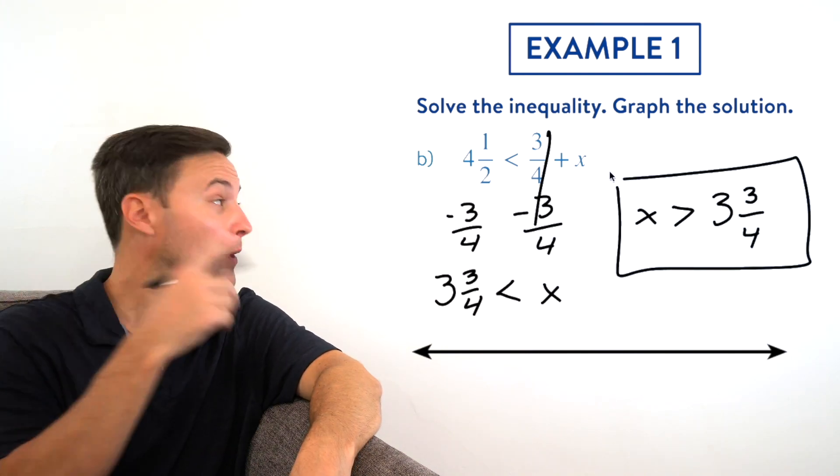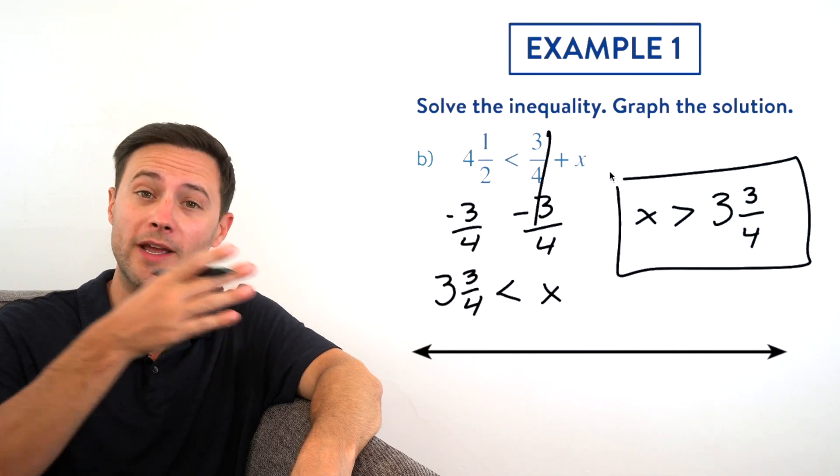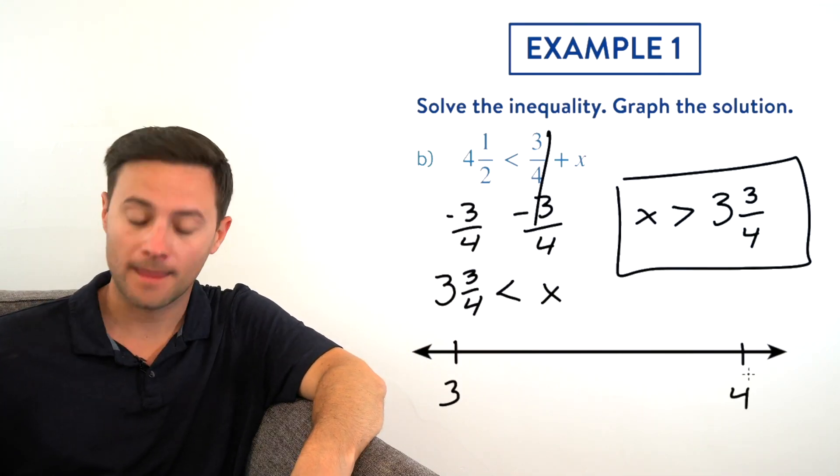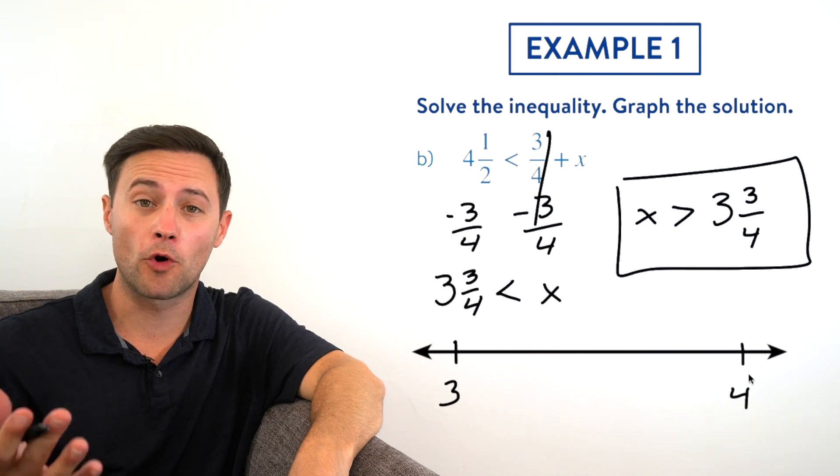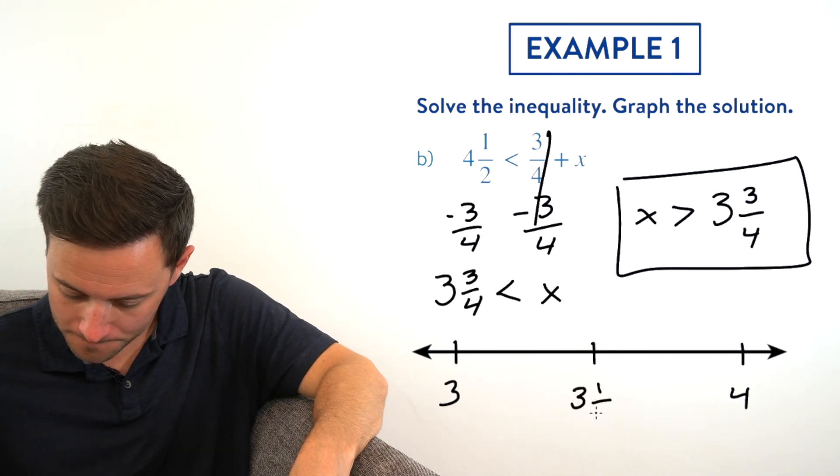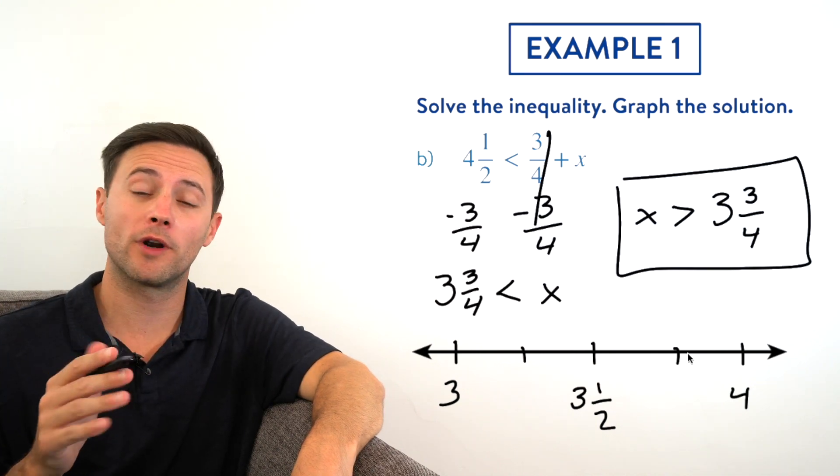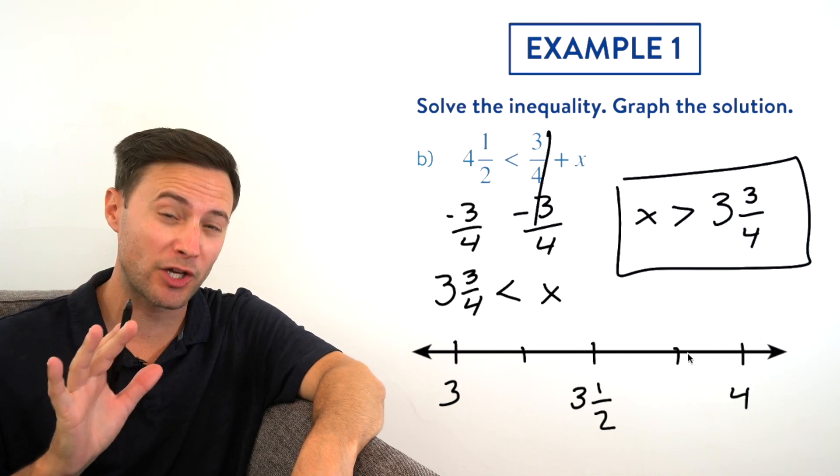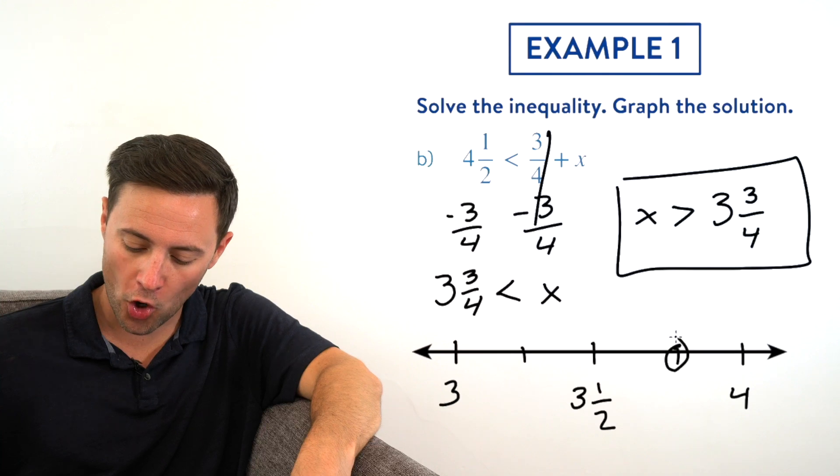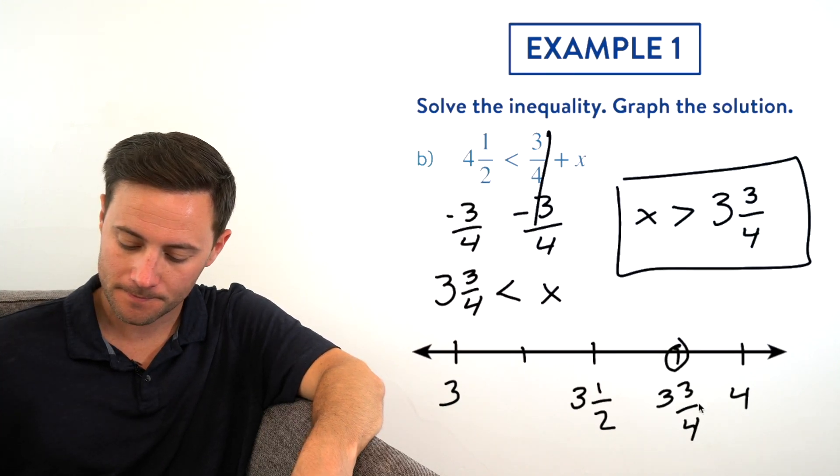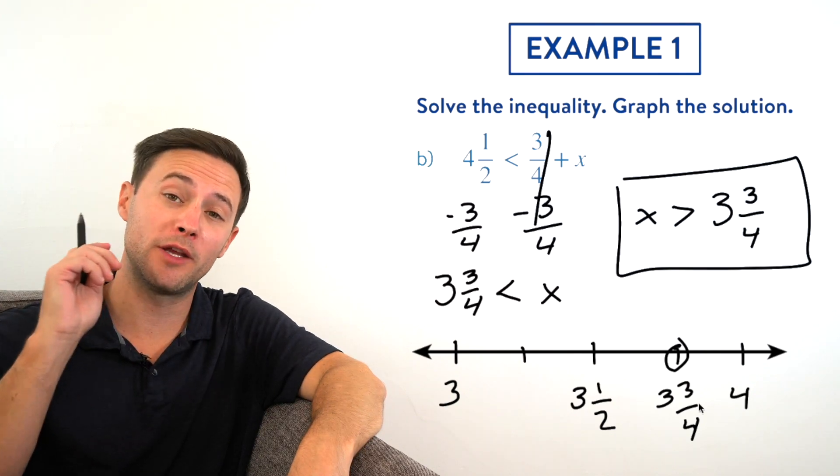And now let's graph. 3 and 3 fourths is in between 3 and 4, so I'm going to start with that. And then I'm just going to break it up into fourths. Because x is greater than 3 and 3 fourths, 3 and 3 fourths is not included, so we need an open circle at 3 and 3 fourths and an arrow going to the right.